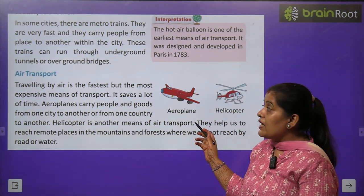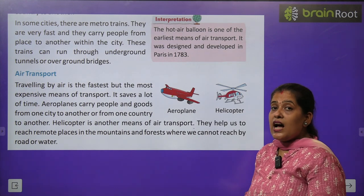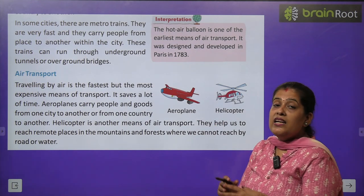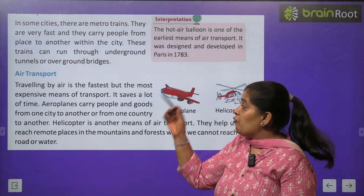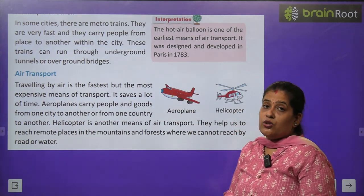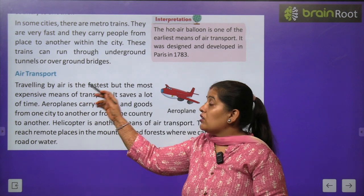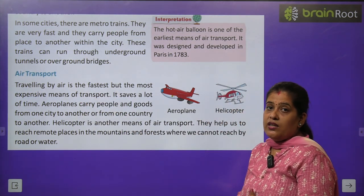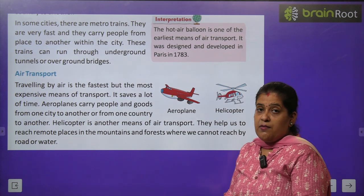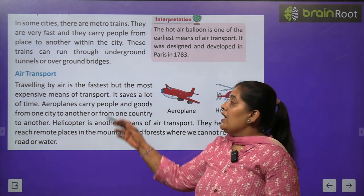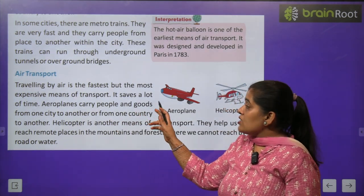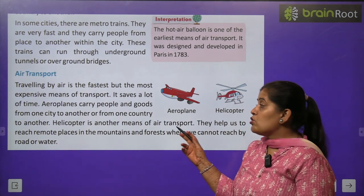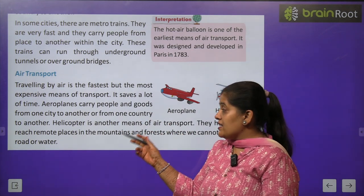Now we will learn about air transport. अब हम उन साधनों के बारे में पढ़ेंगे जो हवा में उड़ते हैं। Air transport सबसे fastest means of transport है, लेकिन यह बहुत expensive है — बहुत ज़्यादा पैसे लगते हैं। It saves a lot of time. Aeroplane लोगों को और सामान को एक city से दूसरी city में और एक country से दूसरी country में ले जाता है।